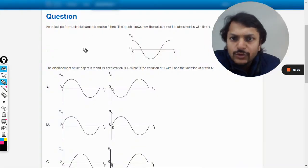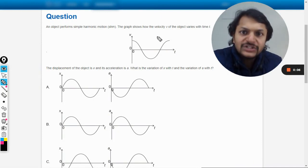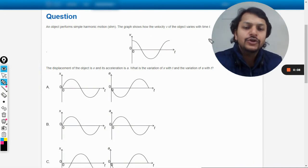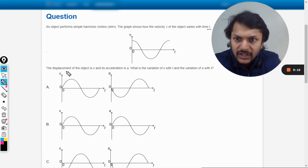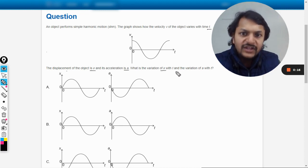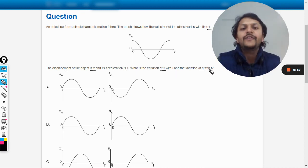Okay dear students, let us do this question. An object performs simple harmonic motion. The graph shows how the velocity v of the object varies with time t, and the graph is given here. The displacement of the object is x, acceleration is a.